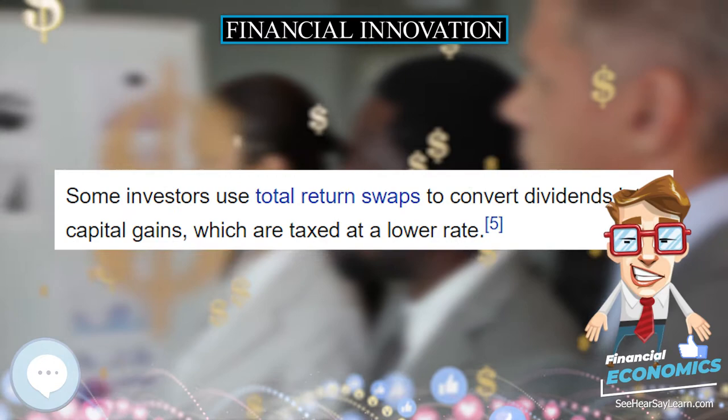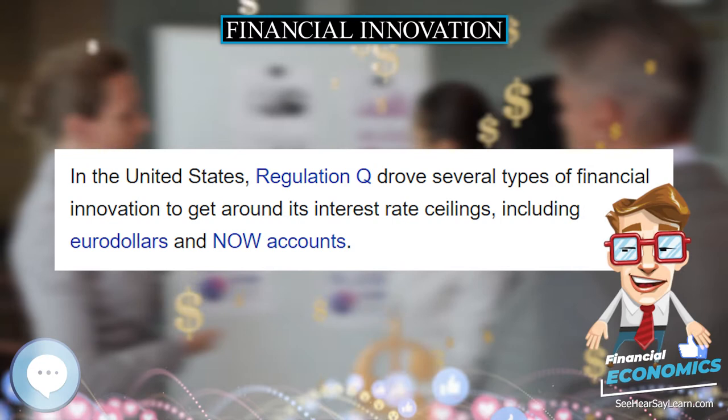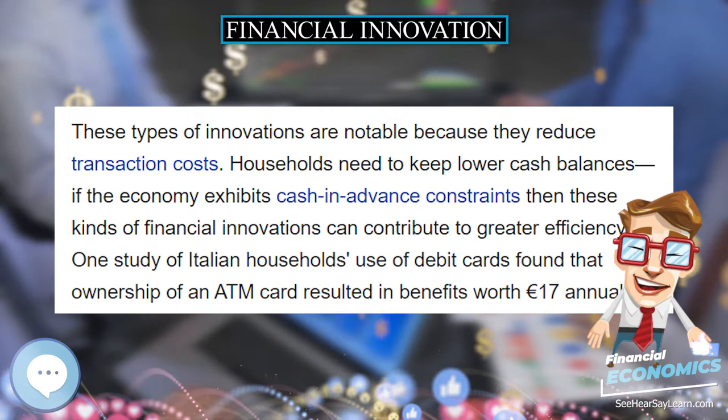Whether debt, equity, or something else. The theorem states that the structure of a firm's liabilities should have no bearing on its net worth, absent taxes. The securities may trade at different prices depending on their composition, but they must ultimately add up to the same value. Furthermore, there should be little demand for specific types of securities.